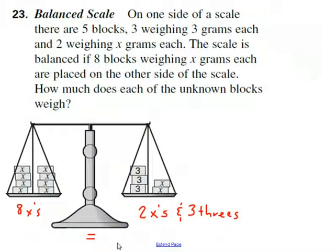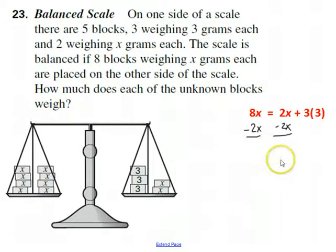The important thing to realize is that they are in balance, which means they are equal to each other. So I can turn this statement in red into an algebraic equation. Eight x is equal to two x plus three times three. Okay, so now what I want to do is get the x's together on one side, just like I taught you.